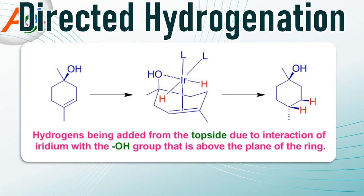The hydrogenation occurs on the same face as the OH group due to coordinative interaction of this group with iridium as shown on the screen. Hydrogens are added from the upper side due to interaction of iridium with the OH group that is above the plane of the ring. Consequently, hydrogens are added from the upper side, causing the methyl group to shift to the lower side of the ring.